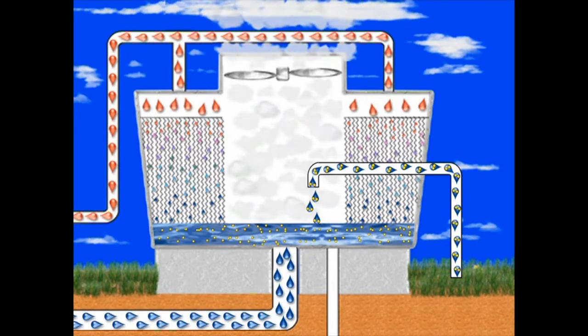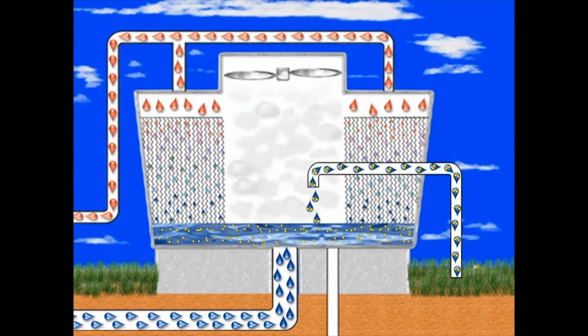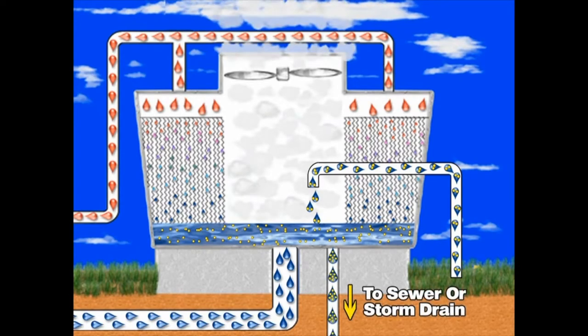To reduce the concentration of elements in the system, a bleed-off valve opens and dumps a portion of the system water to drain as waste water.